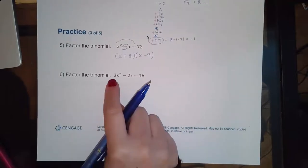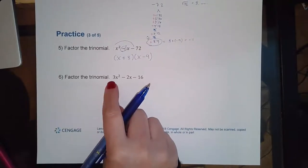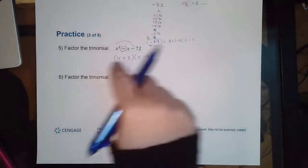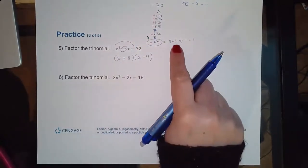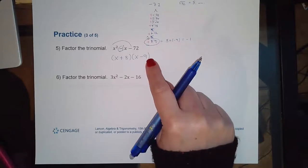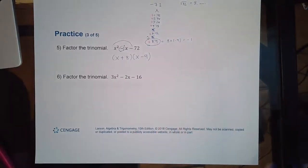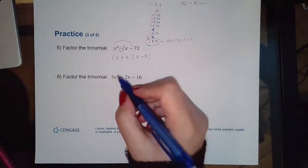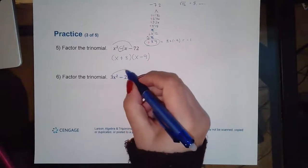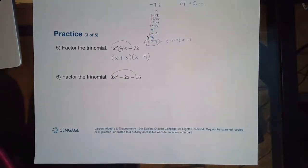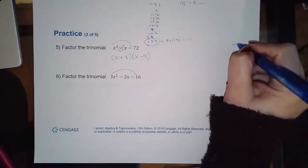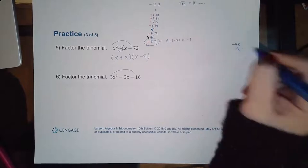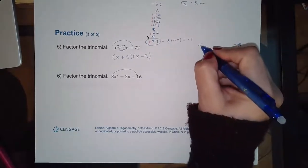This next one has a number in front, so I'm going to do everything exactly the same up to this point. After that I can't shortcut to the answer — I have to go the slightly longer route with grouping. So I'm going to multiply these two together: three times negative 16 is negative 48, so I'll write that off to the side.